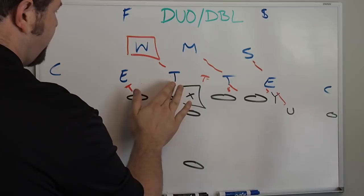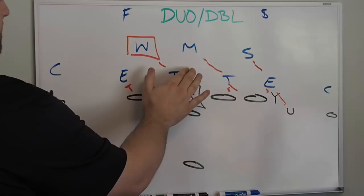So when you watch this play on film, notice who the center is working to. The center is working back to the will, it's duo. The center is working up to the mic, it is zone play.